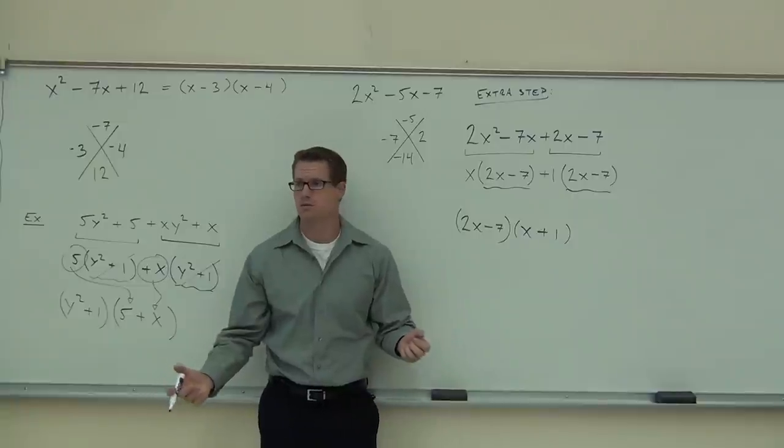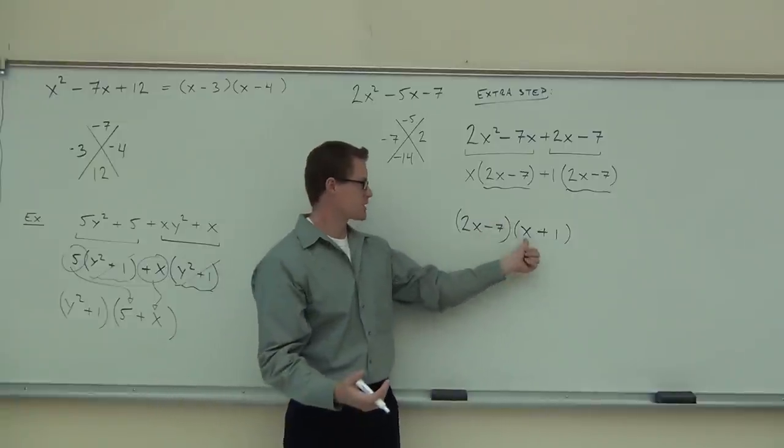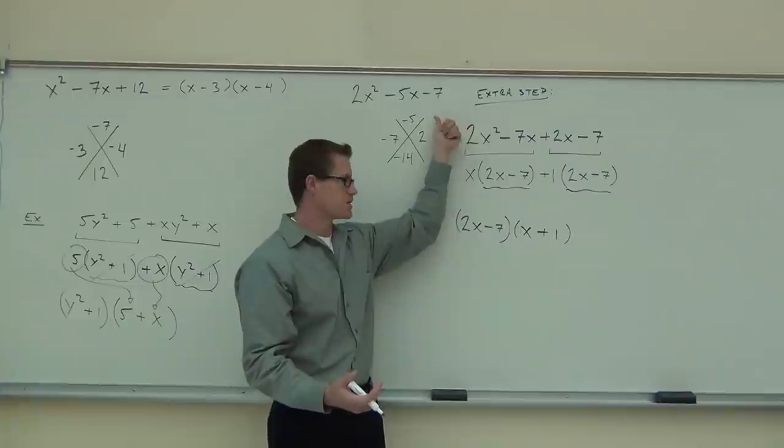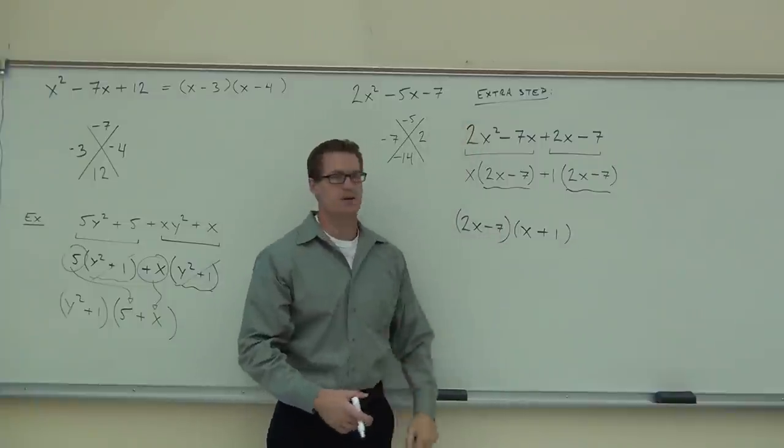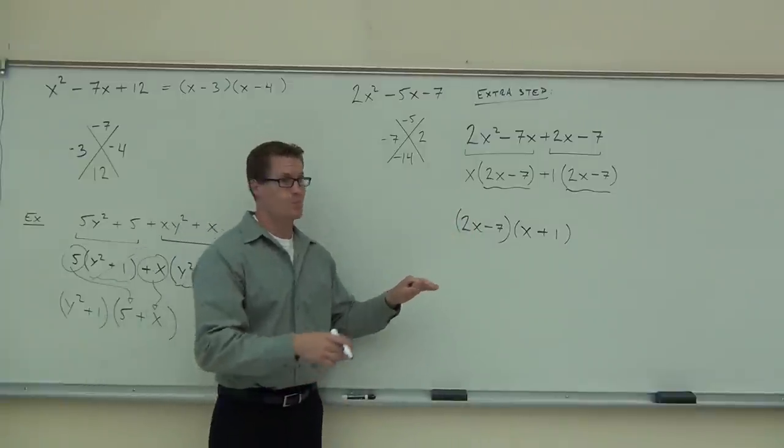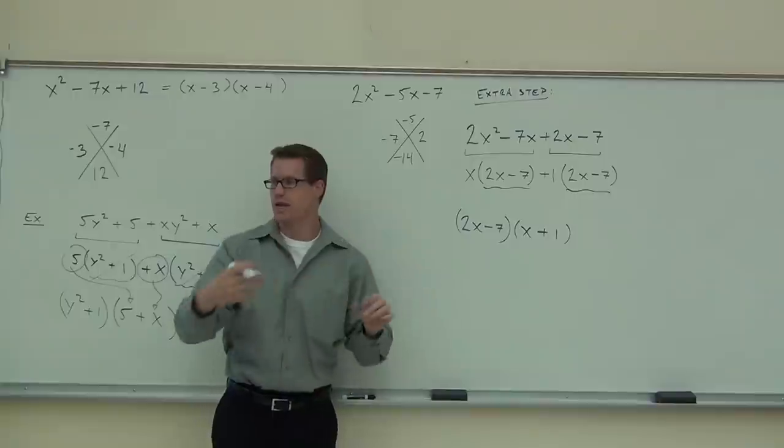Could you check your work? Sure. Distribute that. See that this is 2X squared. You have a 2X minus 7X. Hey, that's negative 5X. And a minus 7. So this works just fine for us. It took us a while to explain that. But this goes pretty quick once you get the hang of it.